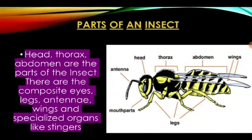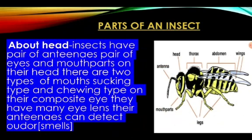Parts of an insect: head, thorax, and abdomen. There are compound eyes, legs, antennas, wings, and specialized organs like stingers. A pair of antennas, a pair of eyes, and mouth parts on their head. There are two types of mouth: sucking type and the chewing type.